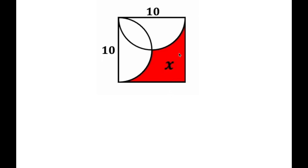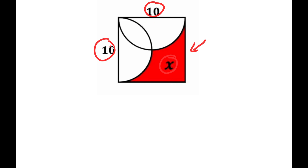In this video I'm going to be finding the value of x, which is the shaded region in red. To find the value of x, I'm first going to find the area of the entire thing. We are given the side lengths, and the area of a rectangle is width times length. Both the width and the length are the same, so the area of the whole thing is equal to 10 times 10, which is 100.